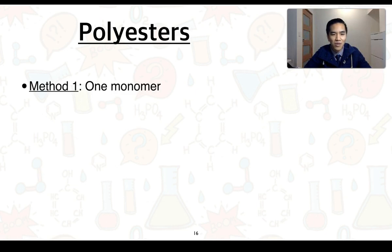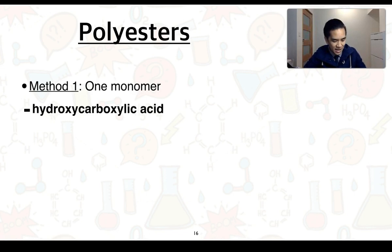For method 1, where there is only one monomer, the monomer is typically what we call a hydroxycarboxylic acid. So it's a molecule that consists of both a hydroxyl group and a carboxyl group, hence it's called a hydroxycarboxylic acid.